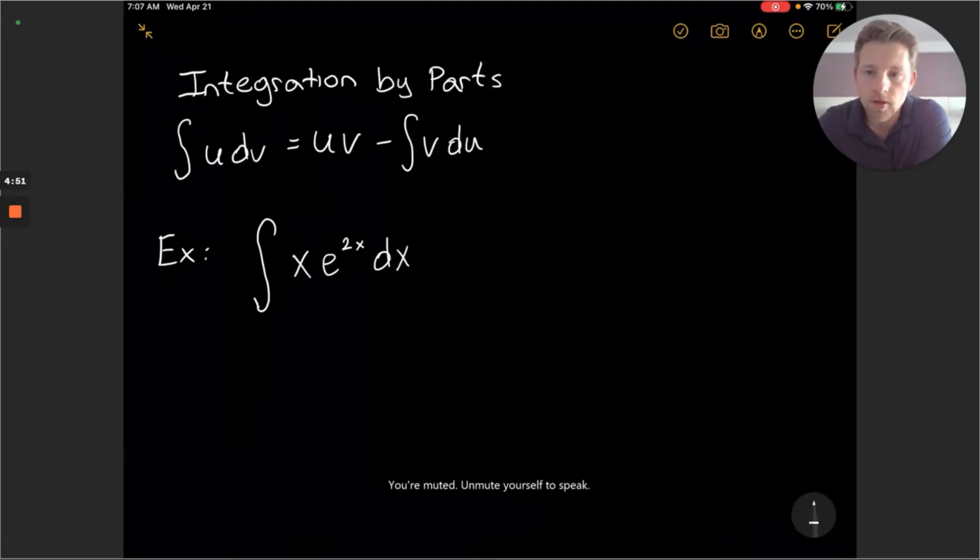So our formula for integration by parts will start with an integral of u dv and that will be equivalent to the u and the v function multiplied together minus the integral v du.